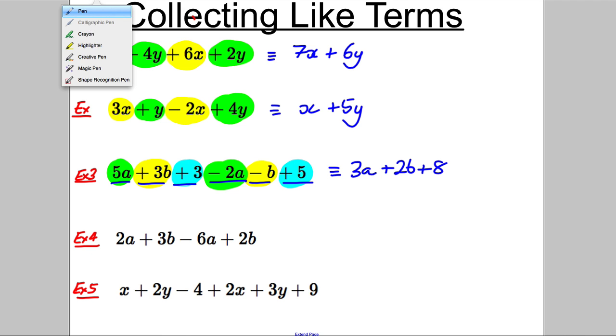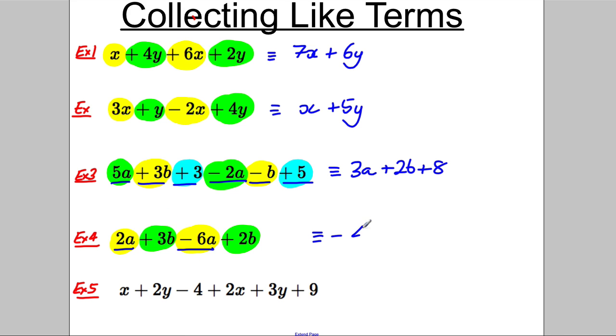Example four. Highlight your A's and B's again. I've got a 2A and I take away a 6A and I've got a positive 3B and I add another 2B. Now careful here, we have negatives. 2A take away 6A, 2 take away 6 is negative 4A and 3B add a 2B is add 5B. And sometimes you'll see the order of these swapped round. You'll see it 5B subtract 4A, but this is correct as well.